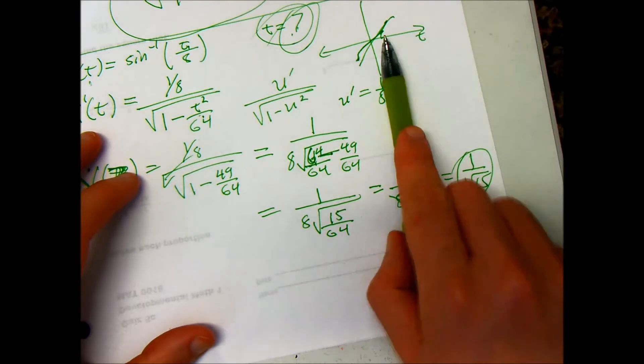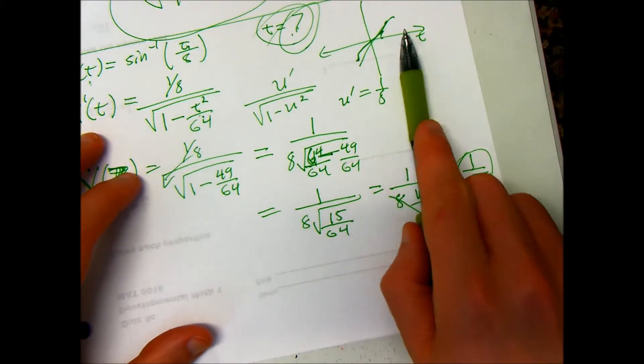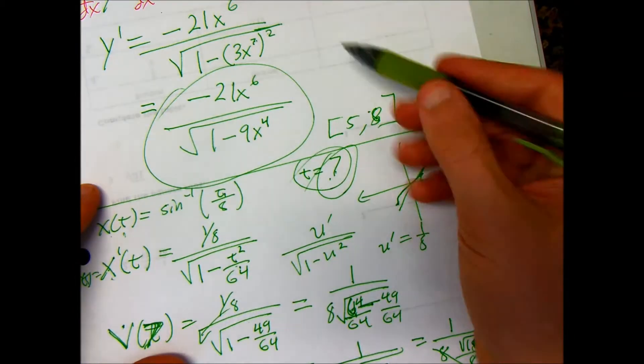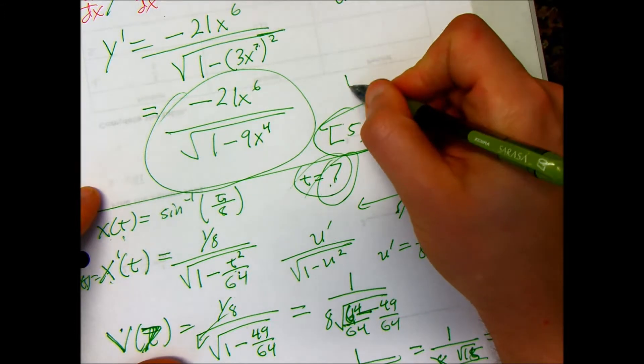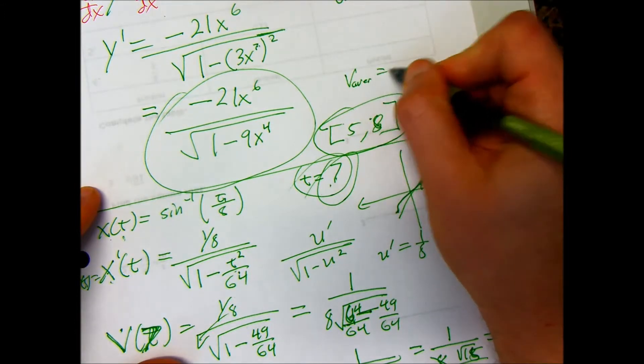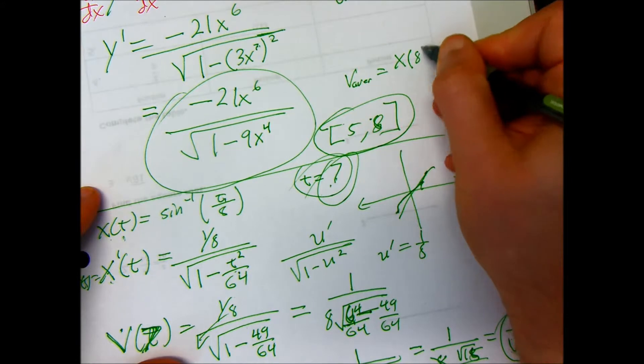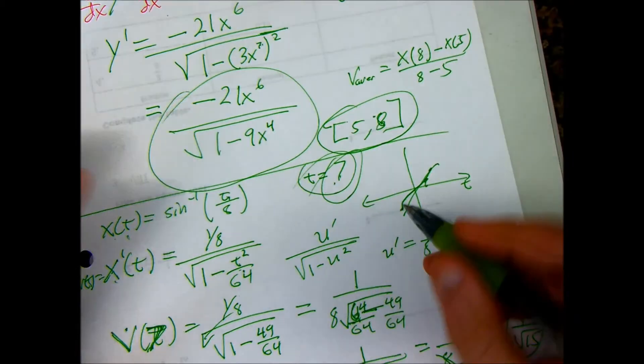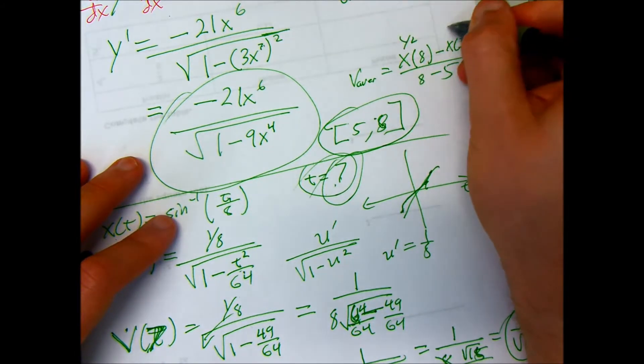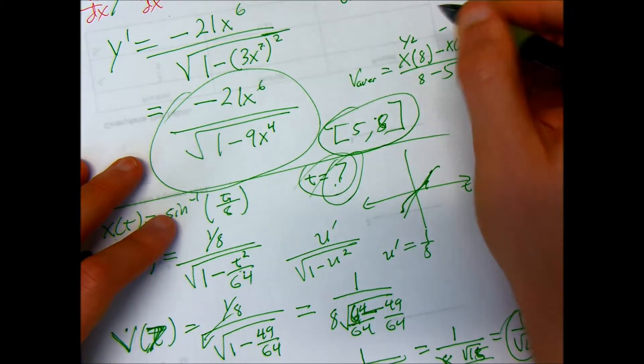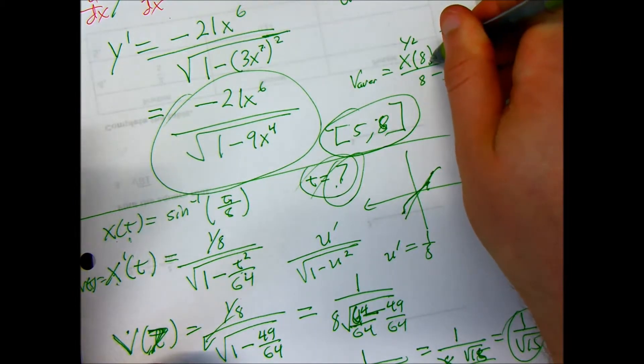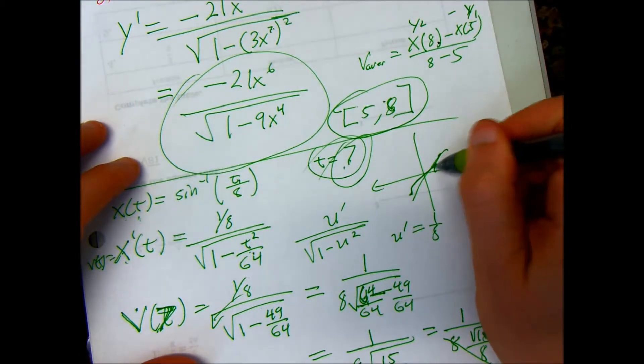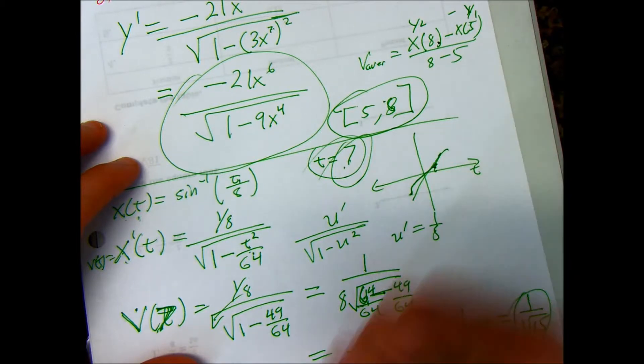So, remember, velocity at a particular value, or instantaneous velocity, same thing, is the derivative of position. Average velocity, they have to give you an interval, and they would say the average is going to be x of 8 minus x of 5 over 8 minus 5. This is like the slope formula, y2 minus y1 over x2 minus x1. So, average is the regular old slope formula from regular pre-algebra, algebra, whatever. And then instantaneous, meaning the tangent line at one point, is my derivative.